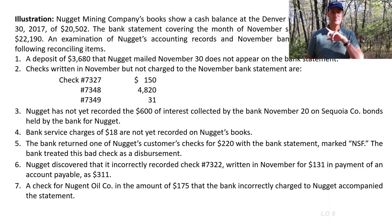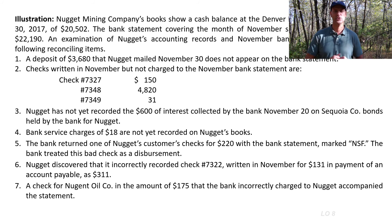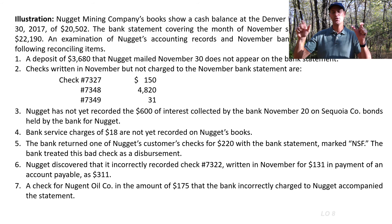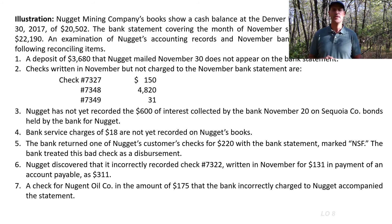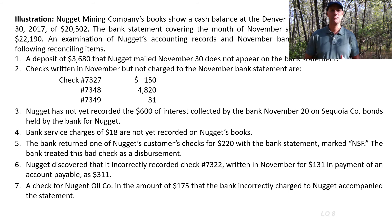We start our reconciliation with balance per bank of $22,190 and balance per book of $20,502. First reconciling item: a deposit of $3,680 that the company mailed on November 30th does not appear on the bank statement. That is a deposit in transit — it needs to be an adjustment added to the bank balance for $3,680.